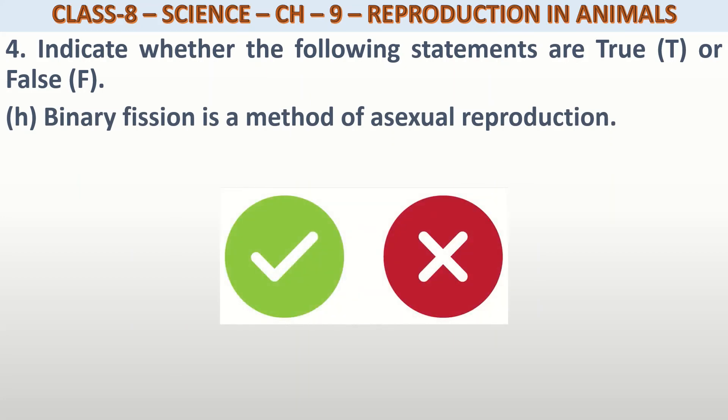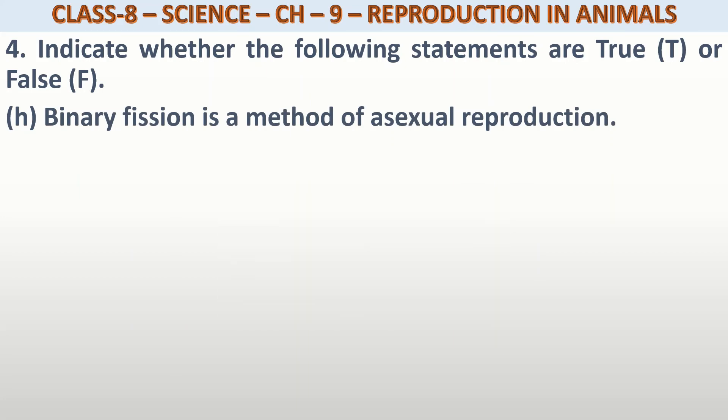Binary fission is a method of asexual reproduction. Yes, binary fission आपको किस में देखने को मिलता है? Amoeba में।